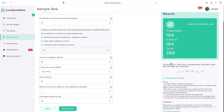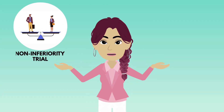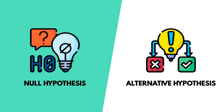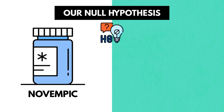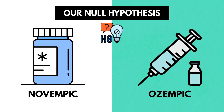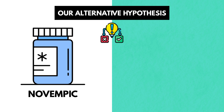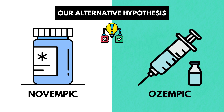You can click on Show Reference to view the formula and citations for your work. Now let's move on to calculating the sample size for a non-inferiority trial and explore how it differs from a superiority trial. This time, our null and alternative hypotheses are very different. Our null hypothesis is that the new treatment, Novempic, is inferior to the standard treatment, Ozempic, by more than the predefined non-inferiority margin. Our alternative hypothesis is that the new treatment, Novempic, is not inferior to the standard treatment, Ozempic, by more than the predefined non-inferiority margin.